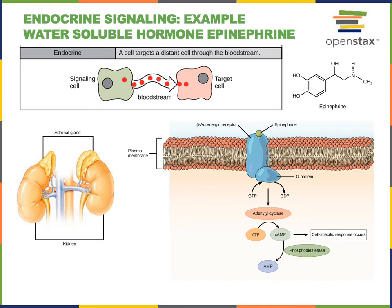One example of a water soluble hormone is epinephrine. Epinephrine is secreted by the adrenal glands and will travel through the bloodstream all through the body. The adrenal glands produce epinephrine in response to stress in order to help the body respond to stress. Epinephrine will bind to receptors on the surface of cells and then those receptors can activate an intracellular signaling mechanism.